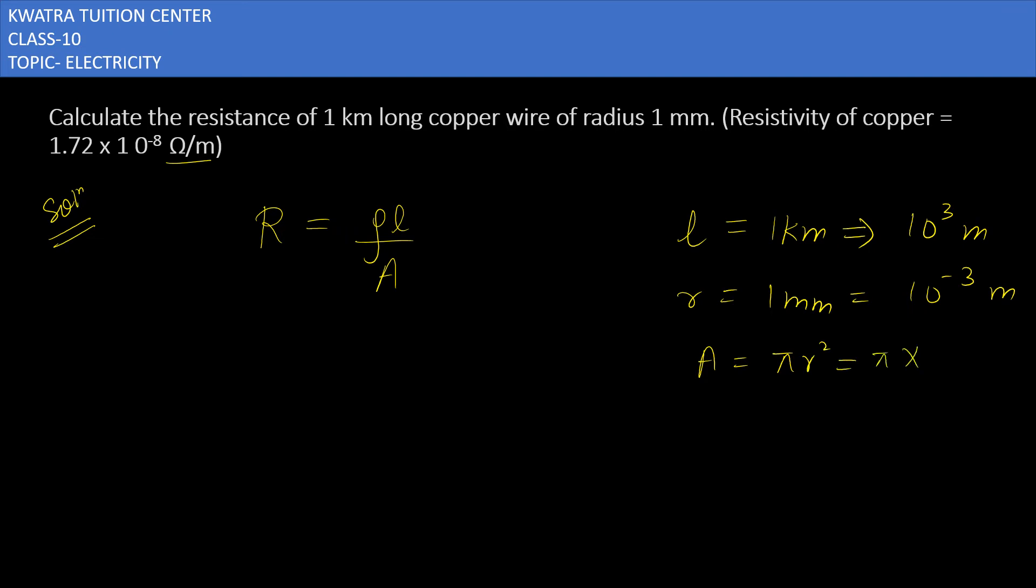You substitute the values. Then you will put the value into this formula, which is resistance equals rho L over A.